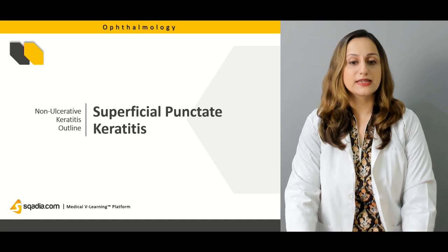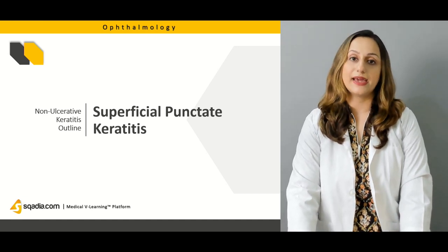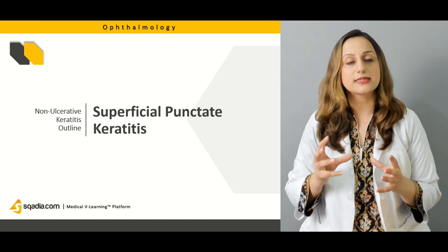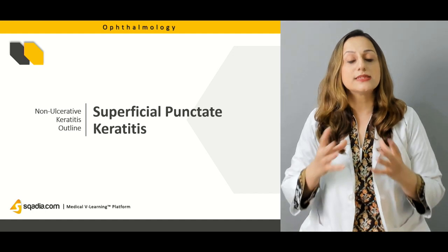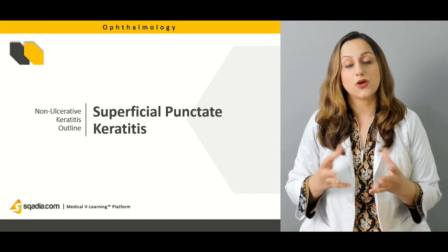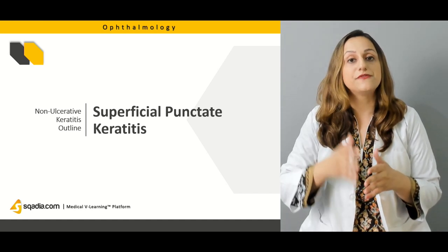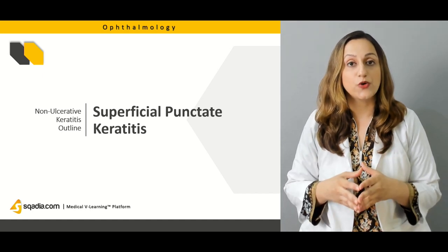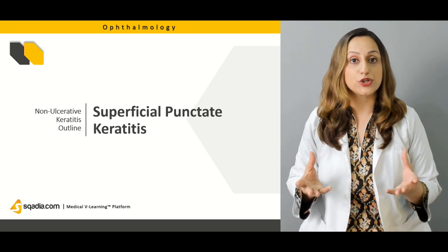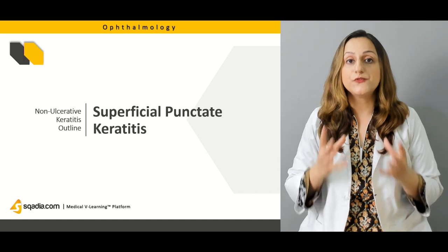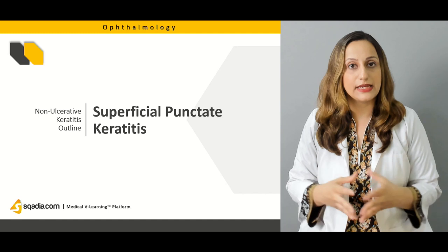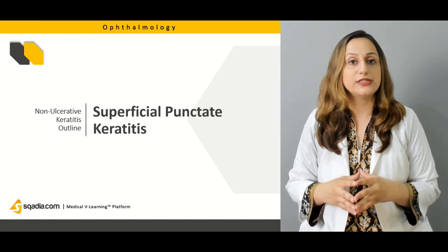Then, of course, we have the conditions known as superficial punctate keratitis. As the name indicates, we'd be finding spots that are termed as the appearance of punctate epithelial findings. We're going to diagnose cases of superficial punctate keratitis on the development of these findings observed on a slit lamp examination. You're going to look for the clinical features using rose bengal staining or fluorescein staining, which can be used for the diagnosis.